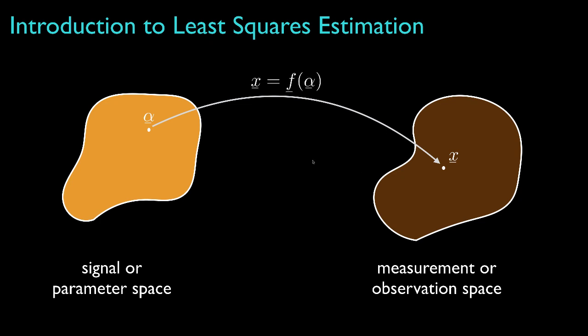And then we'll develop a mathematical model that relates the unknown parameter to the measured observation. For example, if we have three elements in the parameter vector and four elements in the observation vector, then the function f will be a function that transforms those three values into four values.